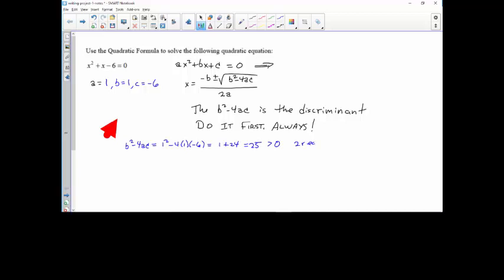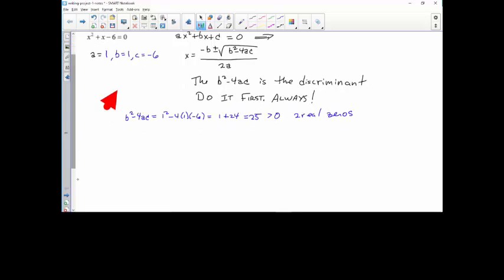Equals 25. 25 is positive. Two real zeros. See, the discriminant tells you what you're up against every time. The fact that it's positive tells me it's two real zeros.